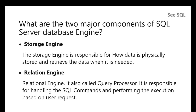The storage engine and relational engine are the core parts of the SQL Server architecture. The storage engine consists of the physical database architecture, which can be divided into two parts: how data is stored physically in the OS file system, and how data is logically arranged in physical storage — that is, pages and extents.